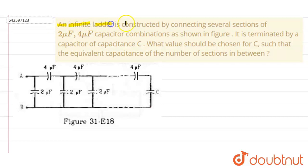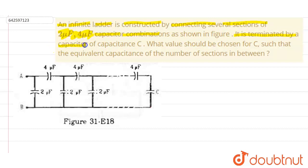Hello students. Our question is: an infinite ladder is constructed by connecting several sections of two microfarad and four microfarad capacitor combinations, as shown in the figure. It is terminated by a capacitor of capacitance C. What value should be chosen for C such that the equivalent capacitance of the infinite ladder network remains independent of the number of sections?